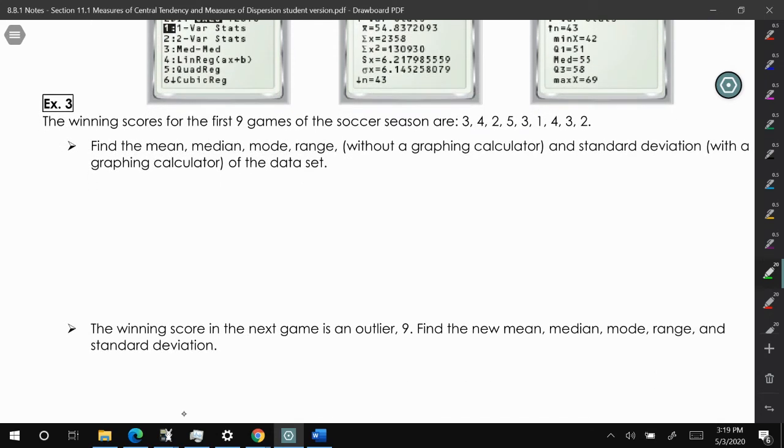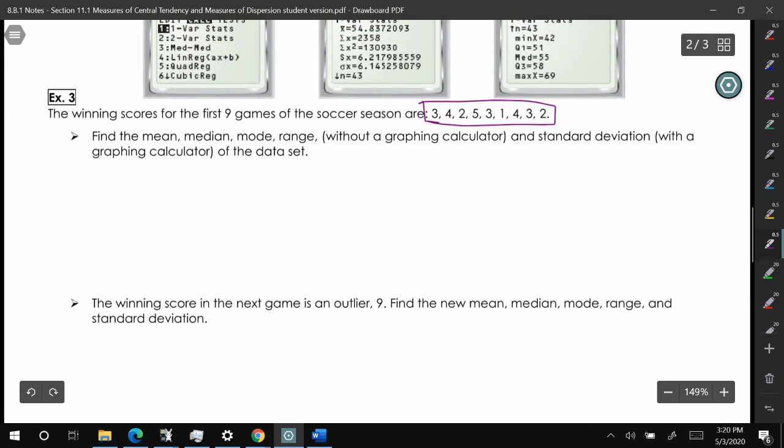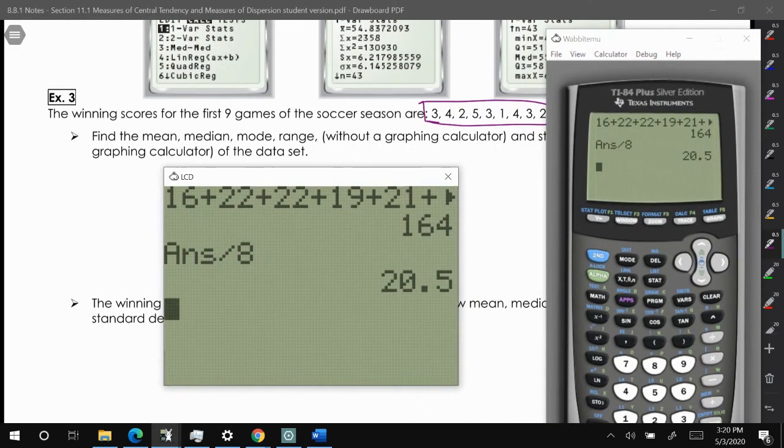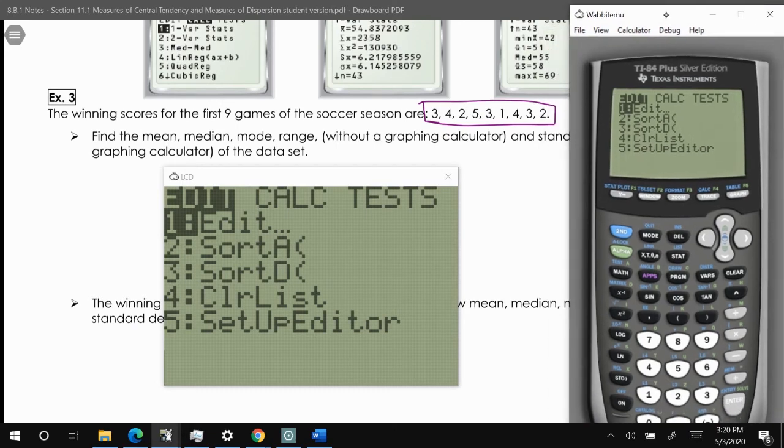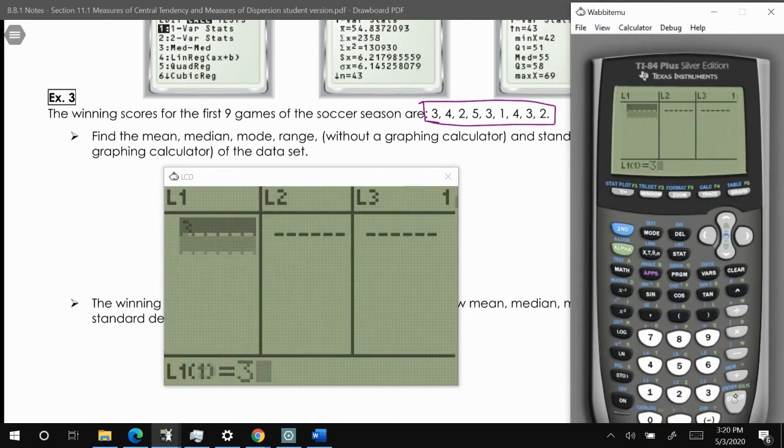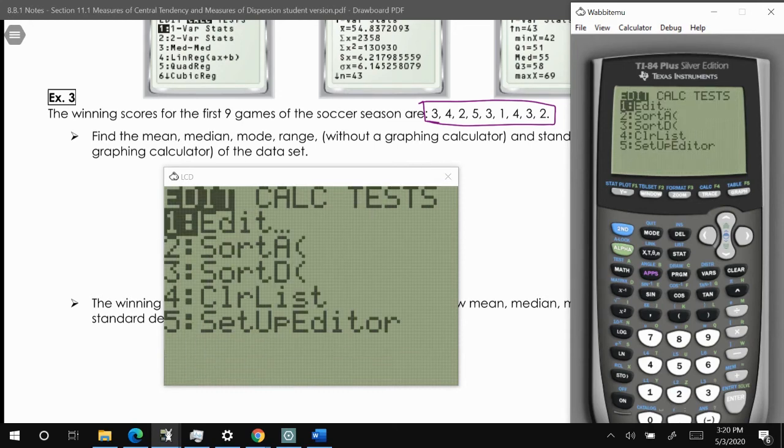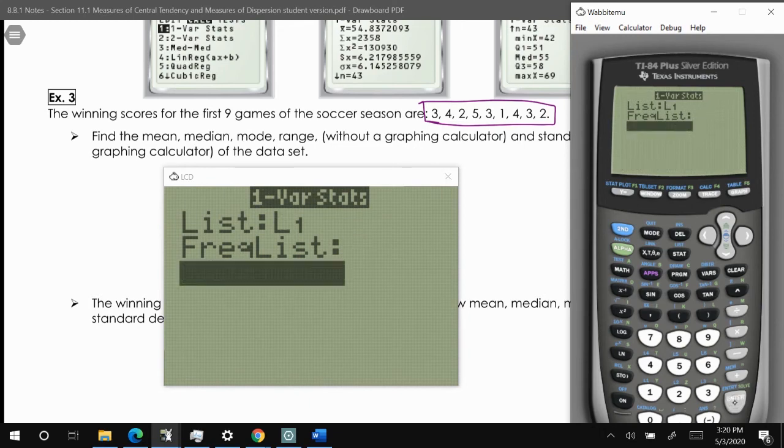We're going to find the mean, median, mode, and range of these scores. First thing we're going to do is input the data into our graphing calculator. Press the stat button and edit our list: 3, 4, 2. Our data is in our calculator. We're going to calculate the values by pressing stat, then over to calc. We want one variable statistics. Press enter, then calculate.